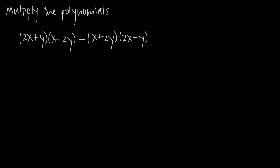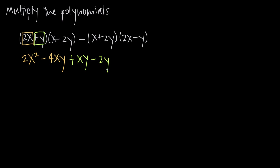So first, let's multiply out. We're going to start with 2x, the first term in our first binomial, and multiply it by every term in the second binomial. The goal is to multiply every term in one polynomial by every term in the other. So 2x times x gives us 2x squared. 2x times negative 2y gives us negative 4xy. Then positive y times positive x gives us positive xy — we always list variables in alphabetical order. Then positive y times negative 2y gives us negative 2y squared, since y times y is y squared.